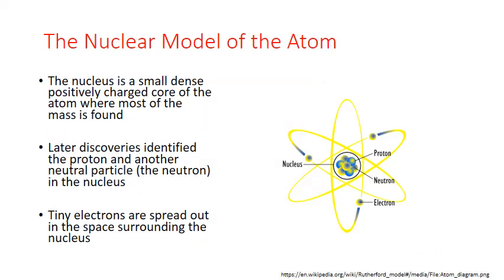These conclusions led to the nuclear model of the atom. The atom consists of a small, positively charged core or nucleus where most of the mass is found. We now know that this core consists of two types of subatomic particles: the positively charged proton and another equally massive neutral particle called the neutron. The tiny electrons are found moving around the nucleus in the large amount of space that makes up the bulk of the atom. There have been quite a few further refinements to our understanding of the internal structure of the atom, but this is a major breakthrough we still rely upon today.